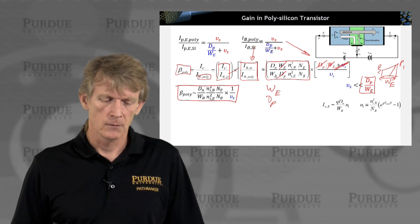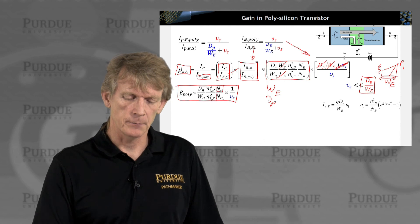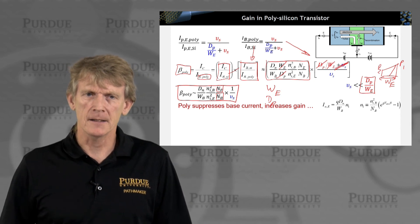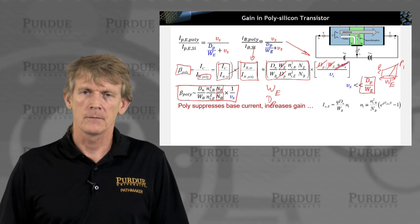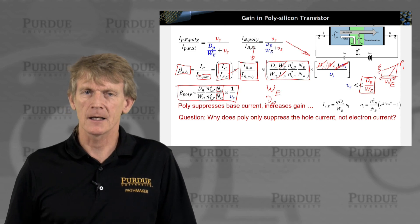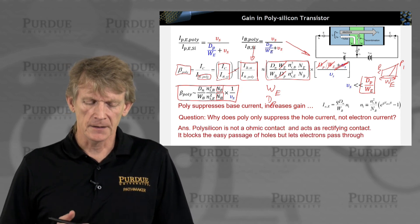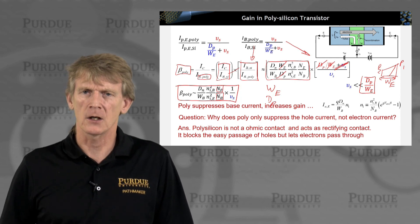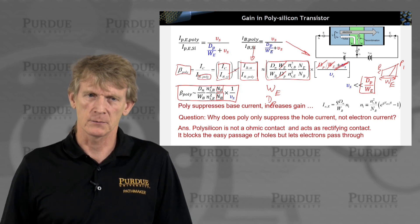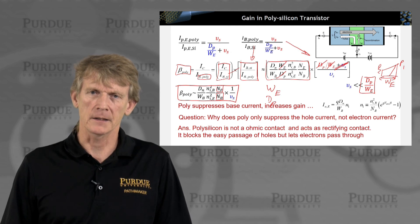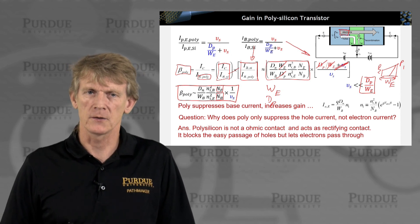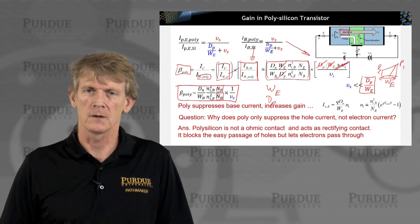So, that's pretty interesting. What's left is still emitter doping, which we had discussed, and the base doping. So, poly suppresses the base current and increases the gain. It's actually being used all the time now in all modern devices. The question is now, why does it only suppress the hole current and not the electron current? And the answer is that polysilicon is not an ohmic contact. It acts as a rectifying contact. It blocks the easy passage of holes but lets electrons pass through. So, that's the underlying benefit that the material property of polysilicon allows electrons to flow freely but it suppresses hole flow.